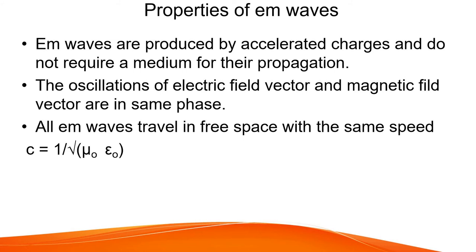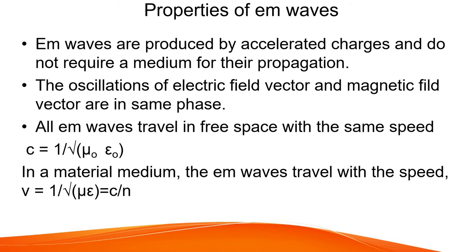All electromagnetic waves travel in free space with the same speed c = 3 × 10⁸ m/s, given by c = 1/√(μ₀ε₀), where μ₀ is the permeability of free space and ε₀ is the permittivity of free space. In any material medium, the speed is v = 1/√(με) = 1/√(μ₀μᵣε₀εᵣ), or equivalently v = c/n, where n is the refractive index of the medium.